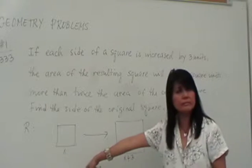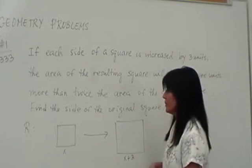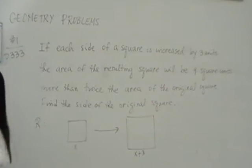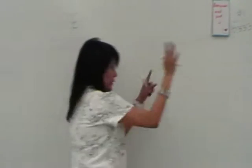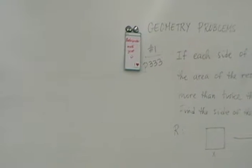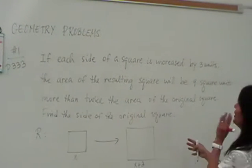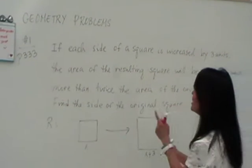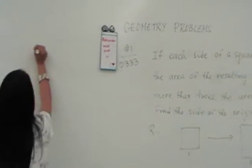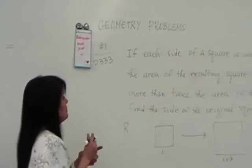We have x became x plus 3. How many letters did we use? Just one. So therefore, how many equations do we need? Just one. So how do we find that equation? Where is the equal sign in the sentence? Will be. If each side, blah, blah, blah, will be.